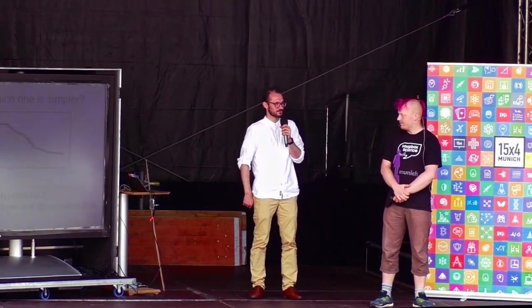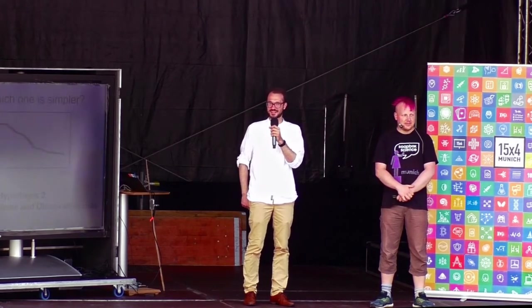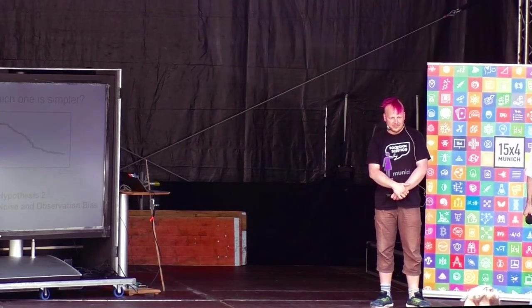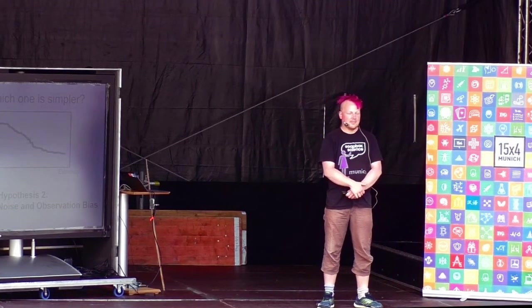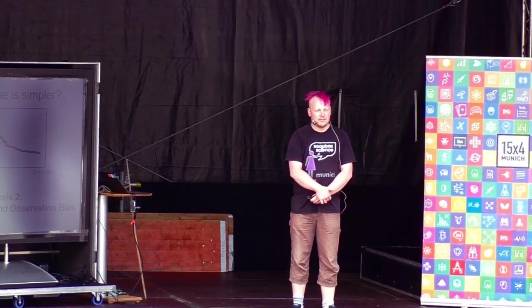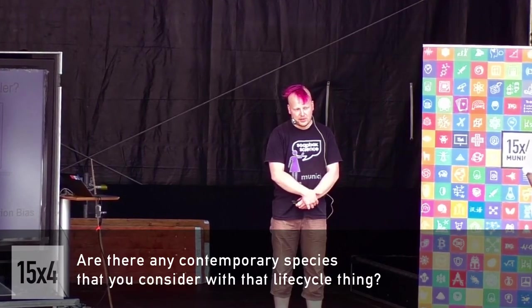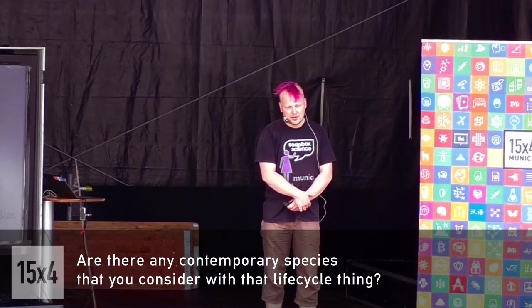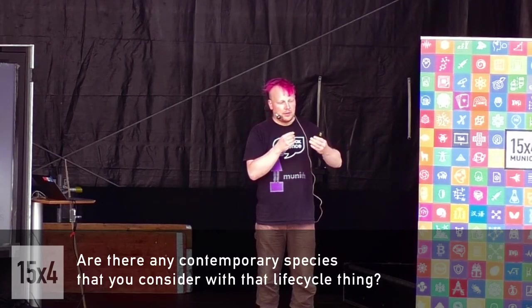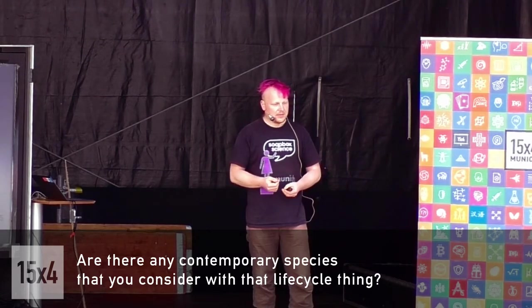Q&A begins. First question: Are there any contemporary species that you consider with that life cycle thing? Is it useful? Or is it just useful for things where you can already see the whole bowl? Answer: This is commonly used, but it's always arguable whether it's retrospectively assigned or whether it's a real life cycle. So nobody really knows. Because you will always find a maximum and then assign, okay, this is adulthood. But the problem with this metaphor about humans is that for humans, you see whether they're adult. Nobody has an idea what it looks like that a species is adult. So that's the main difference.